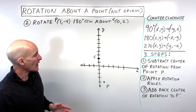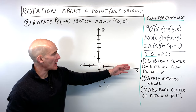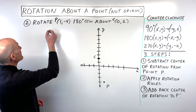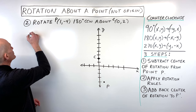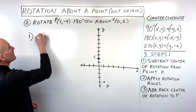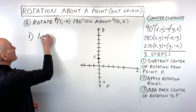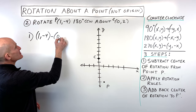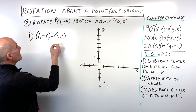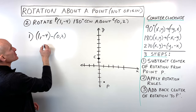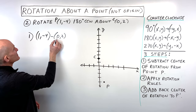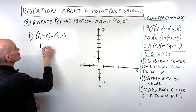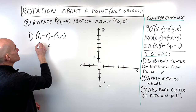If I was going to do it, I'd apply the same rules. Step 1: subtract the center of rotation from the point. So we take (1, -4) and subtract (0, 2). That gives us 1 minus 0 = 1, and -4 minus 2 = -6.